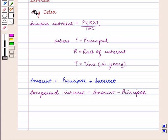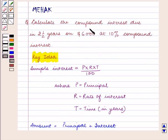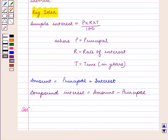With this key idea, we shall proceed with the solution. According to the question, we shall calculate the compound interest due in two and a half years on $6,000 at 10%. To do this, we shall first find the simple interest for the first year, second year, and the last half year, where each time the principal will be the amount at the end of the previous year.